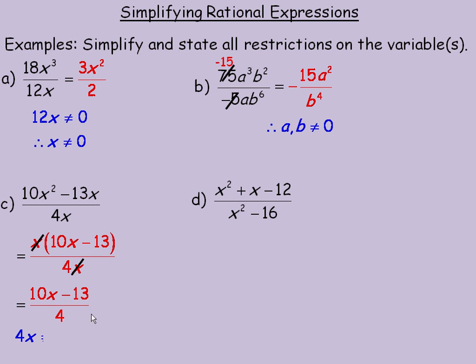So 4x is not allowed to equal 0, divided by 4, we get x is not allowed to equal 0. 0 divided by 4 would be 0. So the restriction on this is that this is defined for any value of x except 0.